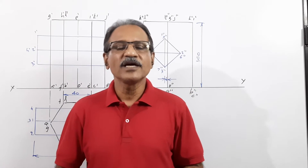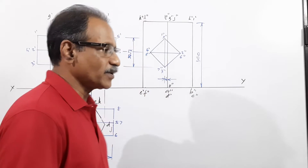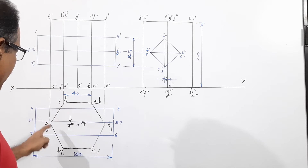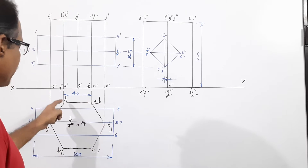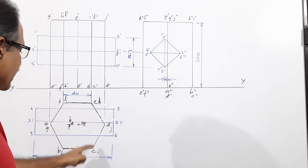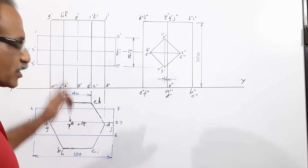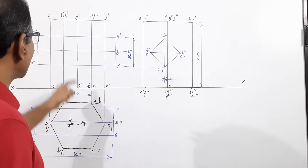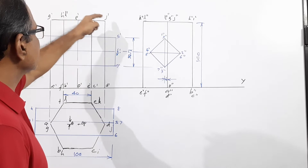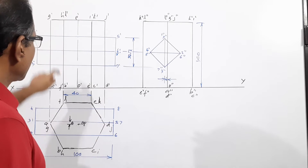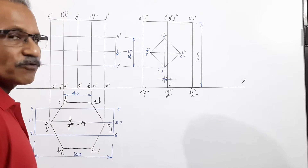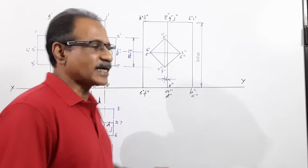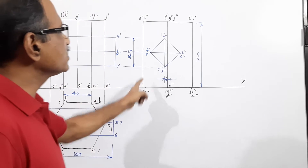The hexagonal prism has a side of base parallel to VP. First, draw a hexagon with one side parallel to VP — points a, b, c, d, e, f for the base and g, h, i, j, k, l for the top, with axis o-p. This gives us the plan, elevation, and end view of the hexagonal prism: 40 mm side, 100 mm axis, standing on its base with a side parallel to VP.